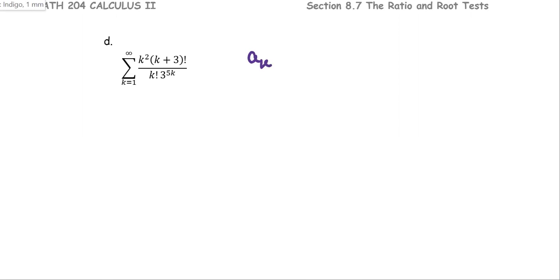For another example, we have the series of k squared times k plus 3 factorial divided by k factorial times 3 to the power 5k. We see factorial on the top and on the bottom, so we can simplify before finding the r value as the limit of the ratio a_{k+1} over a_k. For a_k, that is k squared multiplied by k plus 3 factorial divided by 3 to the 5k times k factorial.